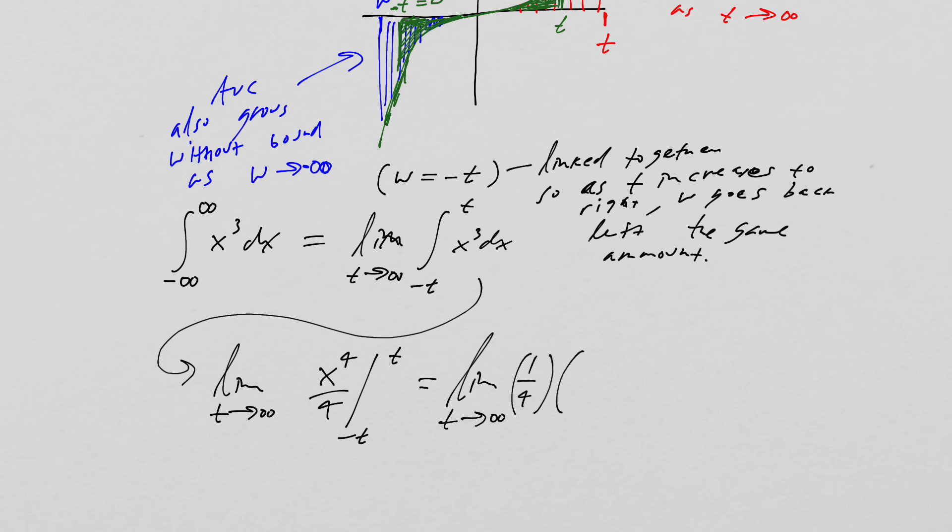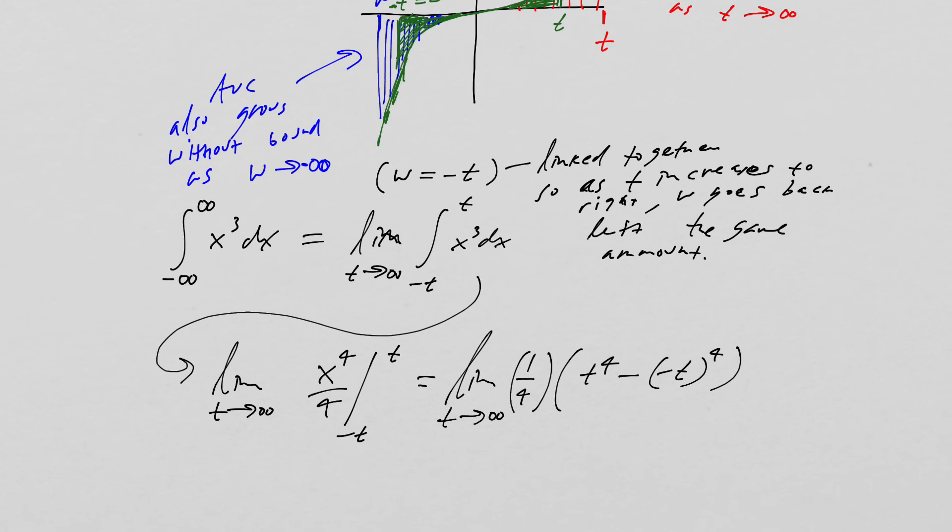One fourth can come out front like that. And then we're going to get t to the fourth minus negative t to the fourth. Okay. So I think now you see the issue, of course, that's going to be the limit t going to infinity.